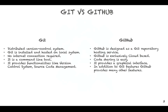Git is installed and hosted on a local system, which means if a single person wants to use a version control system for tracking their changes, they can use Git. But Git cannot be used on a larger scale where sharing of code is required. As it's hosted locally, no internet connection is required.